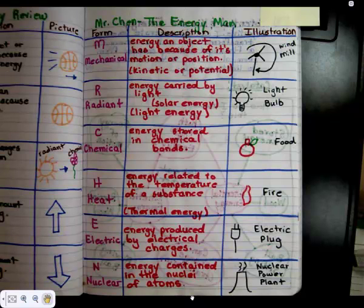M stands for mechanical, R for radiant, C for chemical, H for heat, E for electric, and N for nuclear.